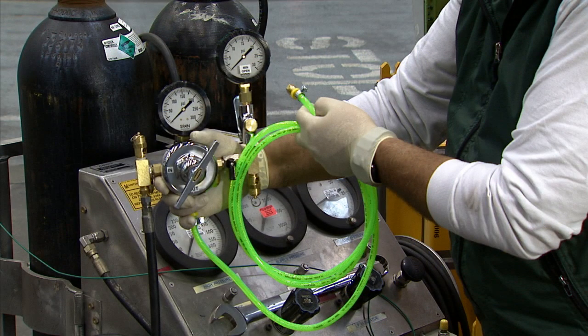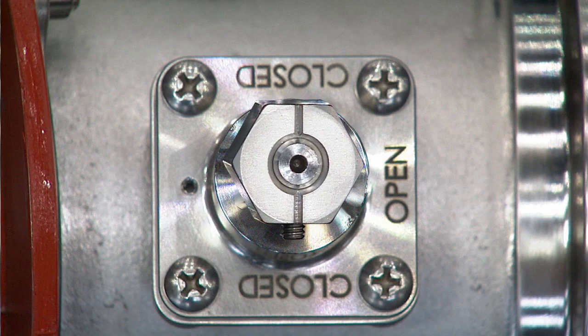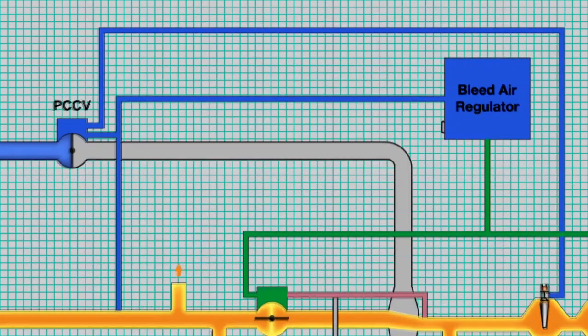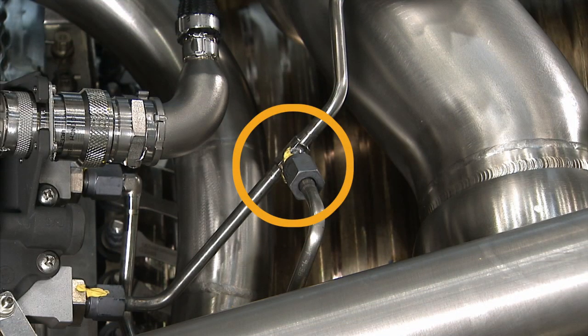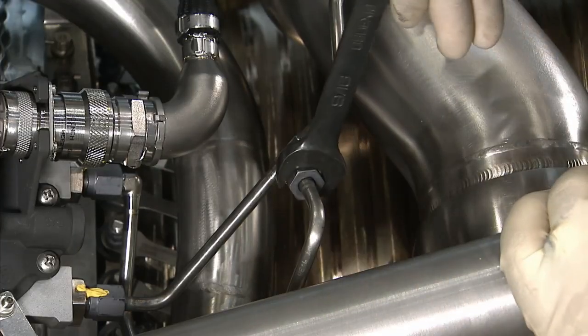Note that in some cases, you may also need to monitor the movement of the valves. For our first example, note that the bleed air regulator, or BAR, and the PCCV share the same supply pressure. On the left side of the engine, a T-fitting takes air from the low-stage duct and sends it to the BAR and PCCV. To simulate the supply air to the BAR and PCCV for testing, remove the supply line from the anti-icing duct to this T, then attach the supply hose from the test supply assembly at the T.